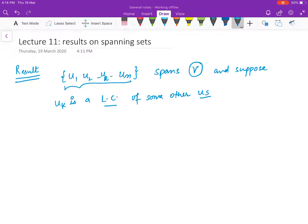You have this uk as a linear combination of other us. Then u1, u2, ..., um without uk - so you have removed uk. Precisely, you can write it as u1, u2, ..., uk-1, then uk+1, ..., um.